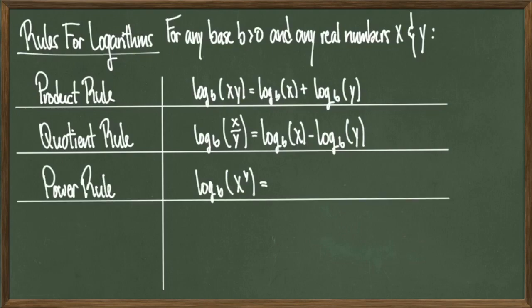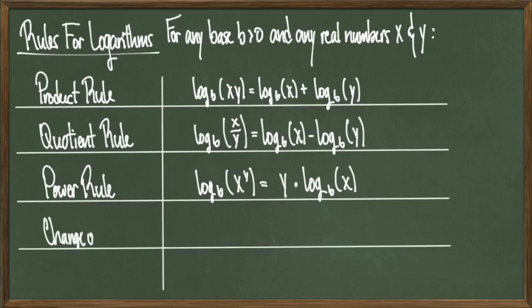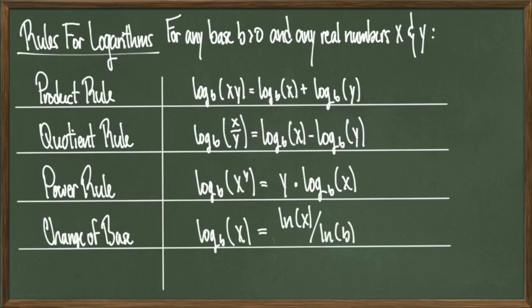Next we have the power rule. It says log base b of x to the y equals y times log base b of x. Basically, powers get moved down to the front. The next rule is called the change of base rule. It says log base b of x is equal to the natural log of x divided by the natural log of that original base.